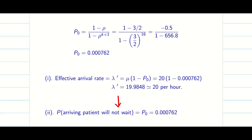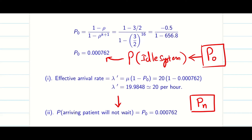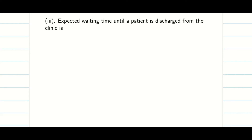The next question asks: what is the probability that an arriving patient will not wait? If a patient does not wait, the system must be idle when they arrive. P_n means the system has n customers; P₀ means zero customers, i.e., an idle system. So the answer is simply P₀, which we already computed.